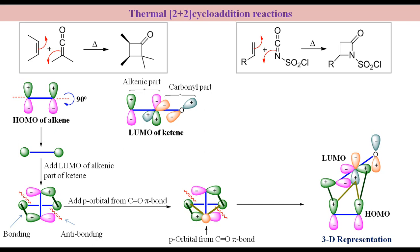Now, there are net bonding interactions because there are four bonding interactions but only two anti-bonding. This makes the reaction favorable under thermal condition.